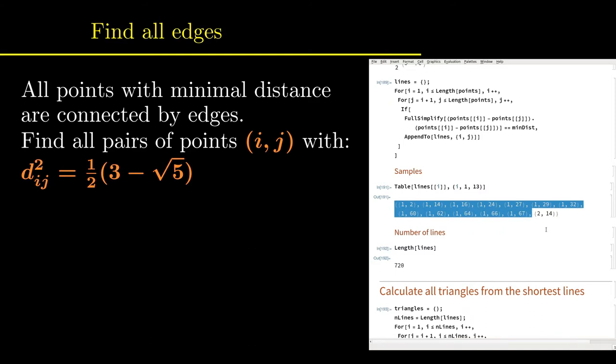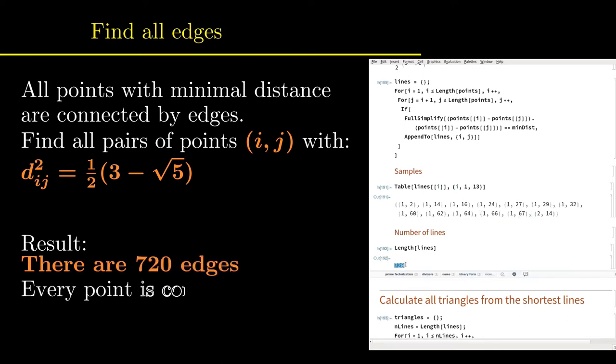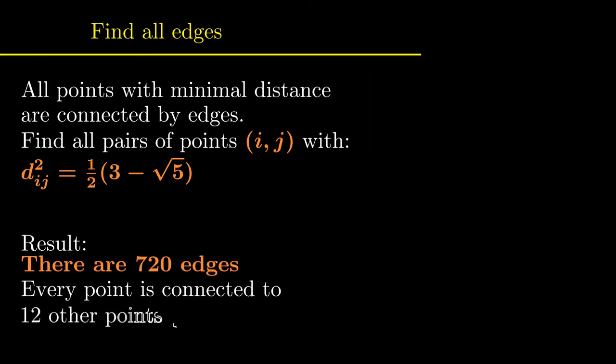Moreover, from the sample of the first edges, one can conclude that each point is connected to 12 nearest neighbors, which confirms the total number of 12 times 120 over two edges.